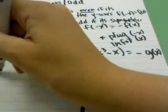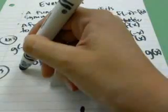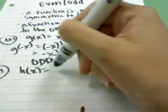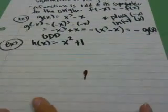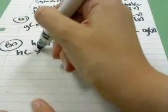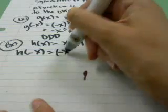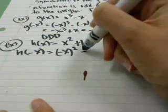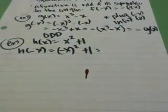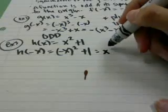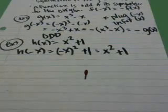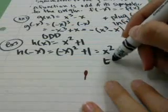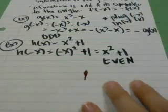Let's look at another example. Example number three. H of x equals x squared plus one. Let's test that one. H of negative x equals negative x in parentheses squared plus one. Something squared always comes back out positive. So, I have x squared plus one. And that's my original. When I get my original back, my answer is even.